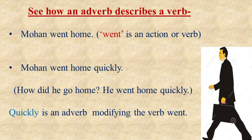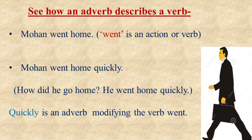Let us see how it works. Two sentences are on your screen. The first sentence is: 'Mohan went home.' This sentence says that Mohan went home, but we don't know in what manner he went. Now the second sentence: 'Mohan went home quickly.' Here the word quickly tells us the manner — he went home quickly, not slowly. So the word quickly is an adverb which is describing the verb went.